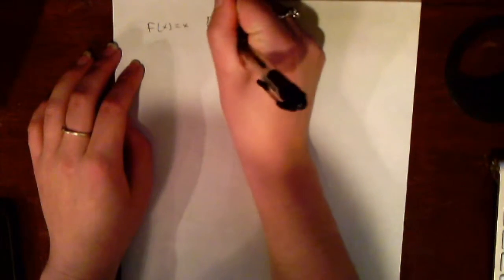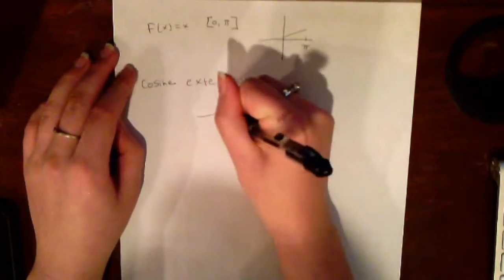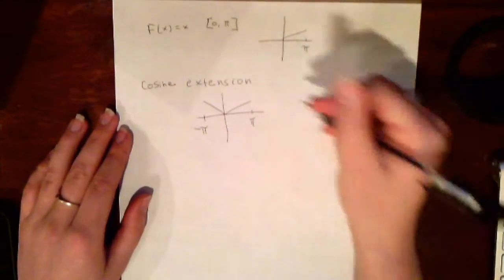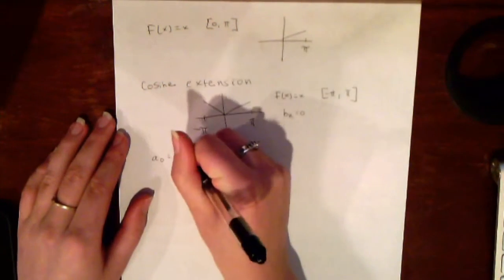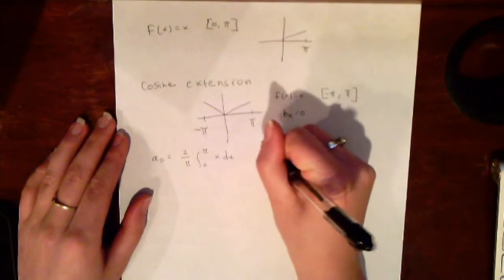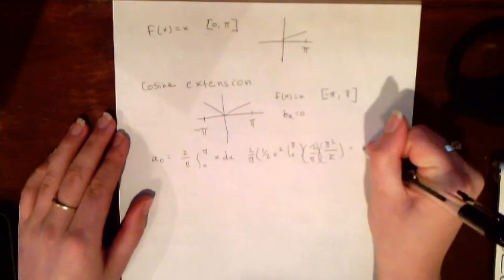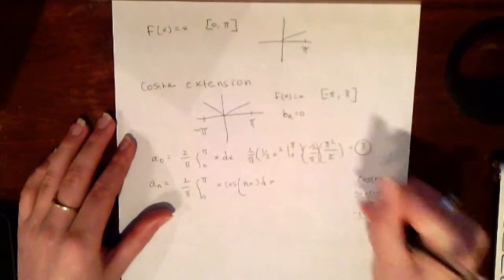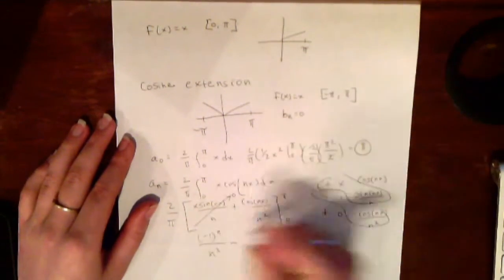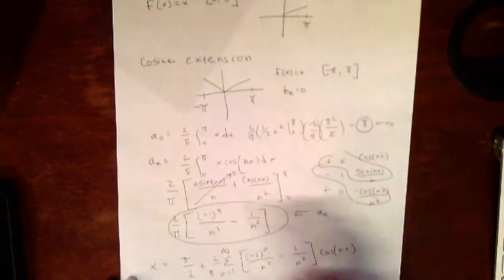My third example is finding the cosine series of the function x defined on 0 to π. Since the function is on a non-periodic interval, we first extend it using the cosine extension. Our new function is even, so b_n equals 0, and a₀ and a_n use the standard even-function formulas. a₀ equals 2 over π times the integral from 0 to π of x dx, giving a₀ = π. a_n equals 2 over π times the integral from 0 to π of x cosine(nx) dx. After integration by parts, the cosine series is: x = π/2 + (2/π) times the sum from n=1 to infinity of [(−1)^n/n² − 1/n²] cosine(nx).